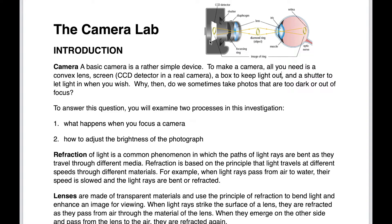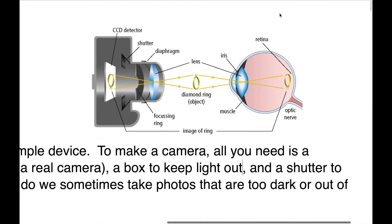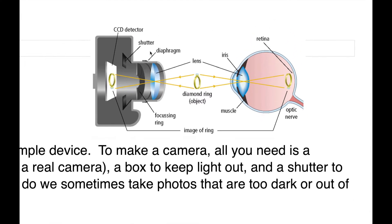So we're going to look at a diagram here to compare what the camera and the eye are like. You can see here this is the camera on the left side and then the eye on the right side, and there's an object in the center that the camera and the eye are both looking at.